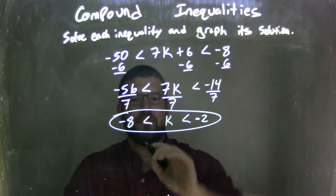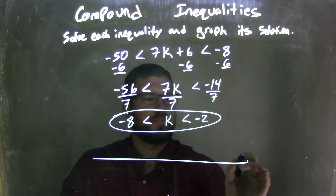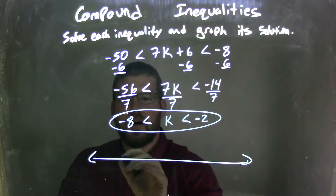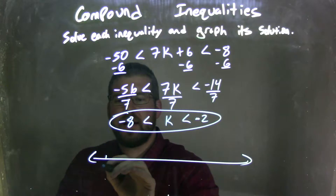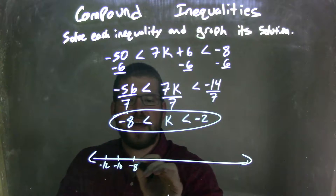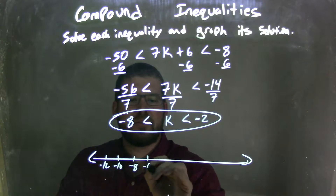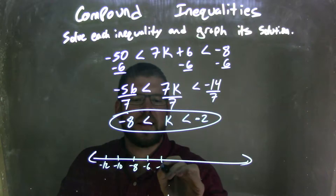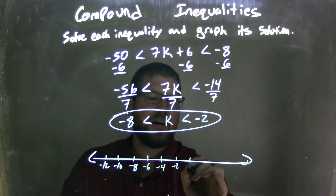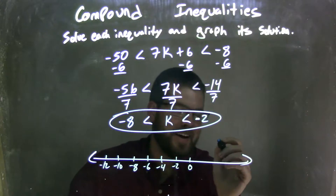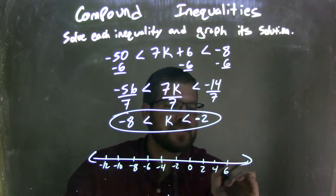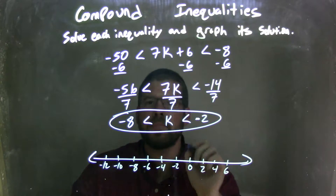But now I need to graph that solution. I'll put a little graph down here. Let's go by 2s, starting at negative 12: negative 12, negative 10, negative 8, negative 6, negative 4, negative 2, 0, 2, 4, 6.